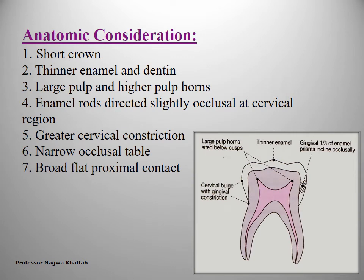When performing cavity preparation for primary teeth, you must take into consideration some anatomical variations. The primary teeth have a shorter crown, thinner enamel and dentine — approximately half the thickness of permanent teeth. They have a larger pulp and higher pulp horns. Also, the enamel rods are directed occlusally at the cervical area of the tooth. They have a greater cervical constriction, narrower occlusal table, and more broad and flattened contacts.